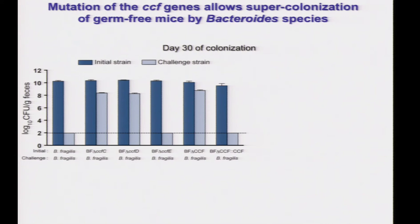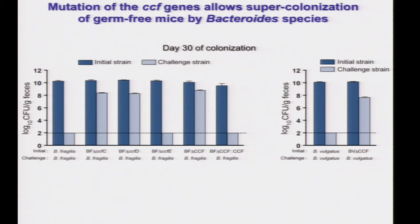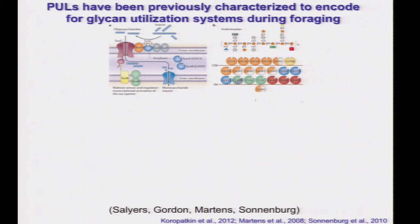We did the exact same thing with Bacteroides vulgatus and saw a similar phenotype: Bacteroides vulgatus will compete against itself, but if you make a mutant of Bacteroides vulgatus, it can no longer exclude challenge by the wild-type strain. These polysaccharide utilization loci have been studied for many years, with one pioneer being Abigail Salyers, who figured out much of the biochemistry.